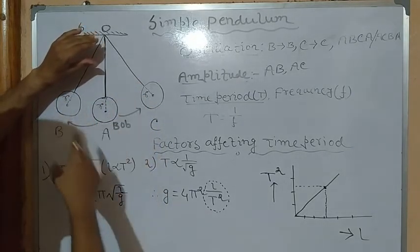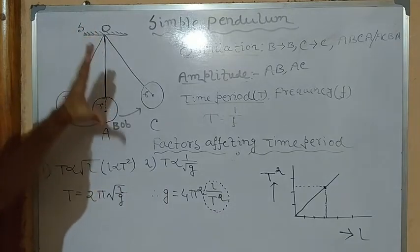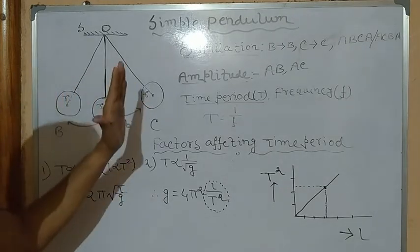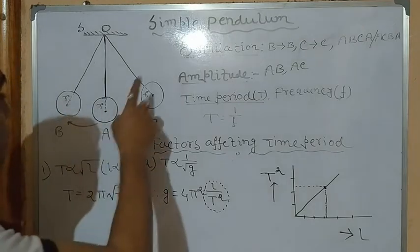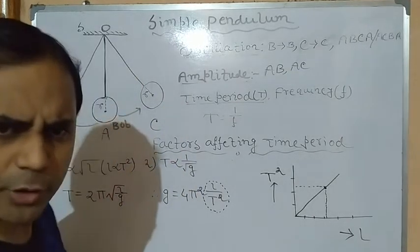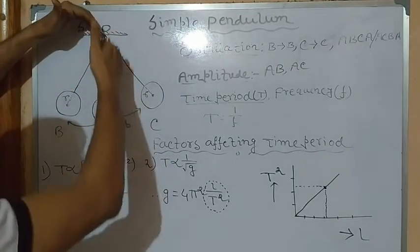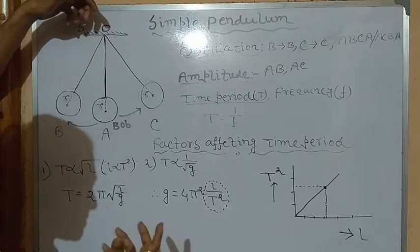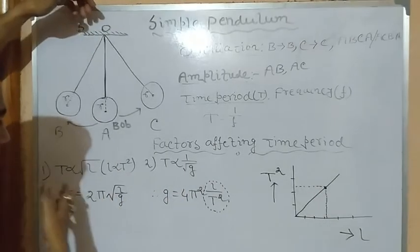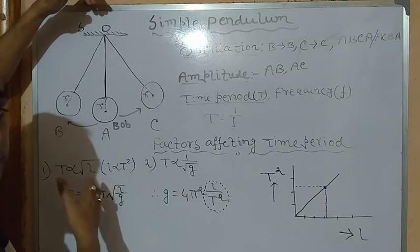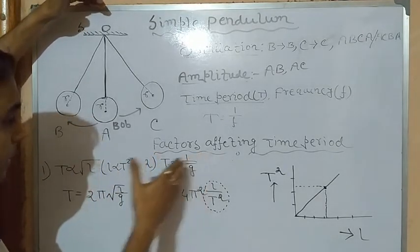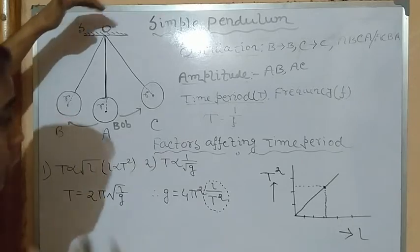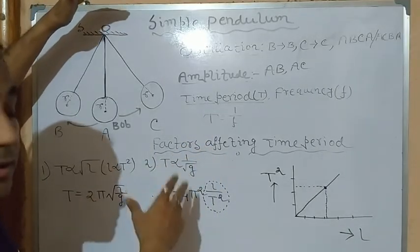With a shorter length, frequency will be more because it swings quickly, so the time period is very small — it completes one oscillation in a very short period of time. Conversely, if we increase the length, there is a larger load, and it will take a much longer time to complete one oscillation because its frequency will be less.